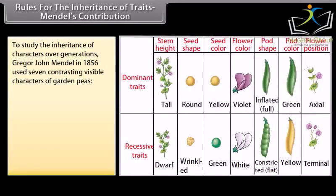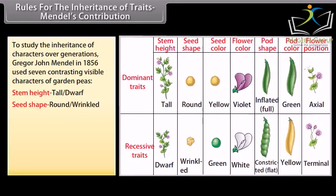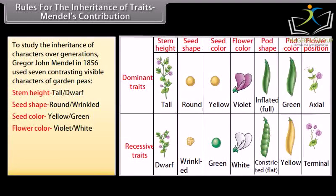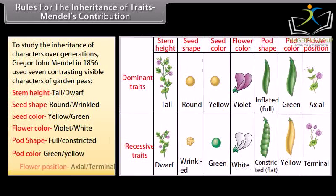To study the inheritance of characters over generations, Gregor John Mendel in 1856 used seven contrasting visible characters of garden peas: stem height — tall and dwarf plants; seed shape — round and wrinkled seeds; seed color — yellow and green seeds; flower color — violet and white flowers; pod shape — full and constricted pods; pod color — green and yellow pods; and flower position — axial and terminal flowers.